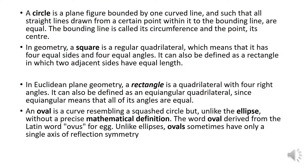An oval is a curve resembling a squashed circle but, unlike the ellipse, without a precise mathematical definition. The word oval is derived from the Latin word ovus for egg. Unlike ellipses, ovals sometimes have only a single axis of reflective symmetry.